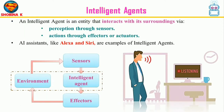An intelligent agent perceives its environment via sensors and acts rationally upon that environment with its effectors. An intelligent agent gets percepts one at a time and maps these percepts into actions. AI assistants like Alexa and Siri are examples of intelligent agents — they use sensors to perceive a request made by the user and automatically collect data from the internet without the user's help. They can be used to gather information about its perceived environment such as weather and time.